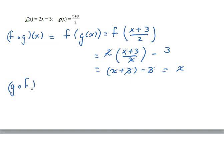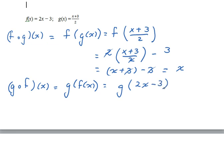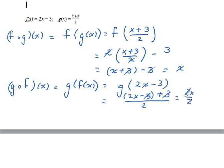The first part is satisfied. Now let's try the composition of g with f of x, which equals g of 2x minus 3. What does g do to anything it sees? It adds 3 and divides the result by 2. So we have 2x minus 3 plus 3, all divided by 2. The 3's neutralize each other to leave 2x over 2, and the 2's cancel to leave x. So yes, f and g are inverses of each other.